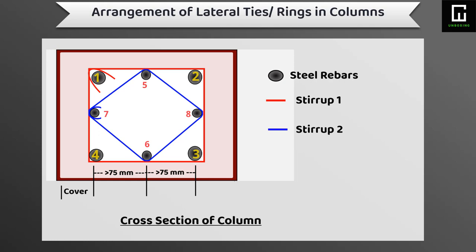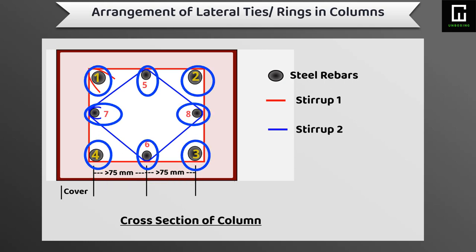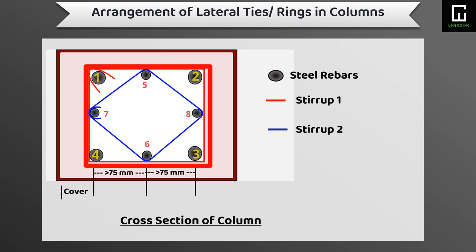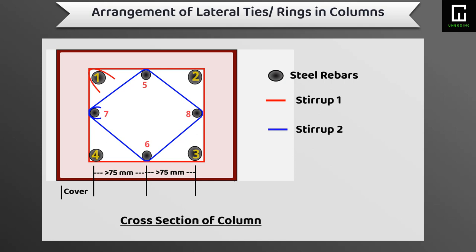Coming to the sixth type of column, the column size is more than 150 mm by 150 mm with eight numbers of longitudinal bars in the cross section. We can provide one regular size tie where bar numbers one, two, three, and four are connected with one regular size tie or stirrup, and another tie connected with bar numbers five, seven, six, and eight.